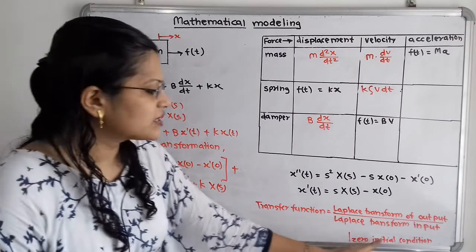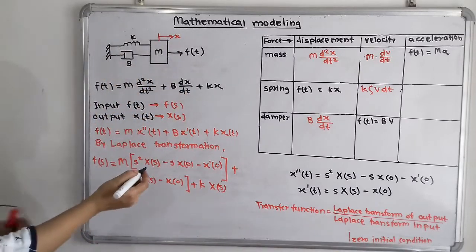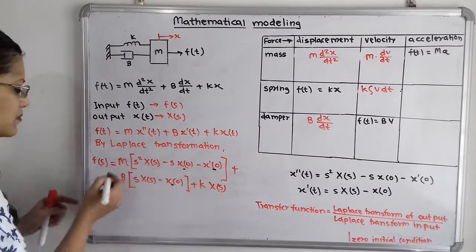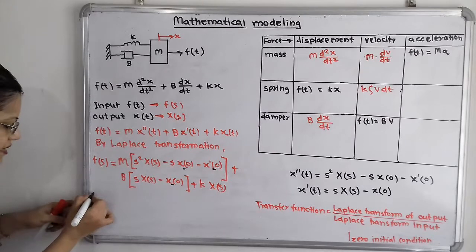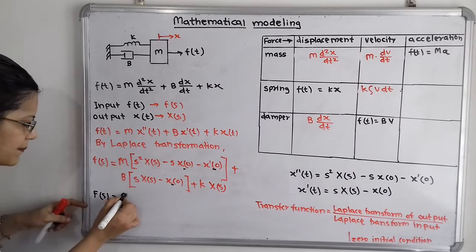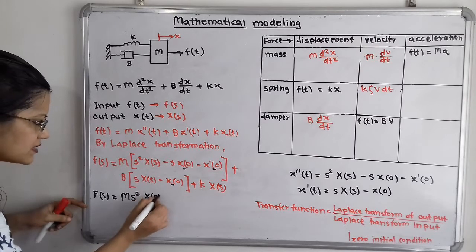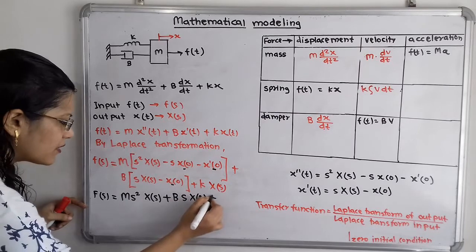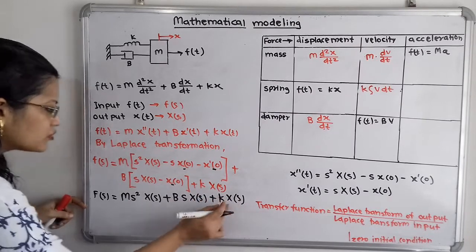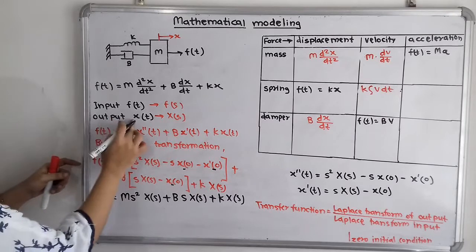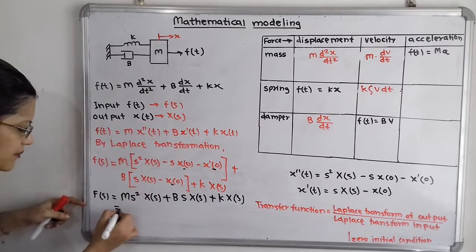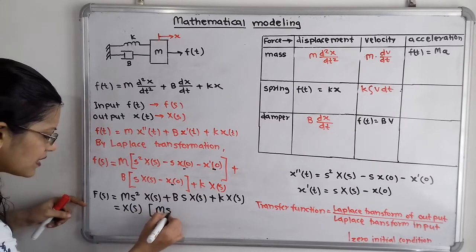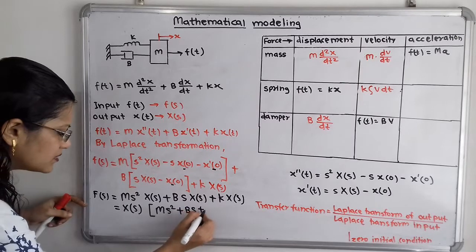Now the condition is zero initial conditions, so all terms x(0), x'(0) become zero. Rewriting: F(s) = m·s²·X(s) + b·s·X(s) + k·X(s). Taking X(s) as common: F(s) = X(s) · (m·s² + b·s + k).